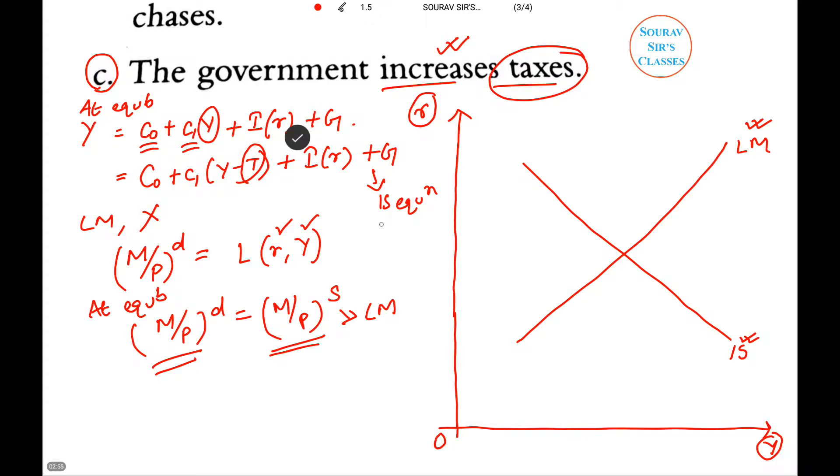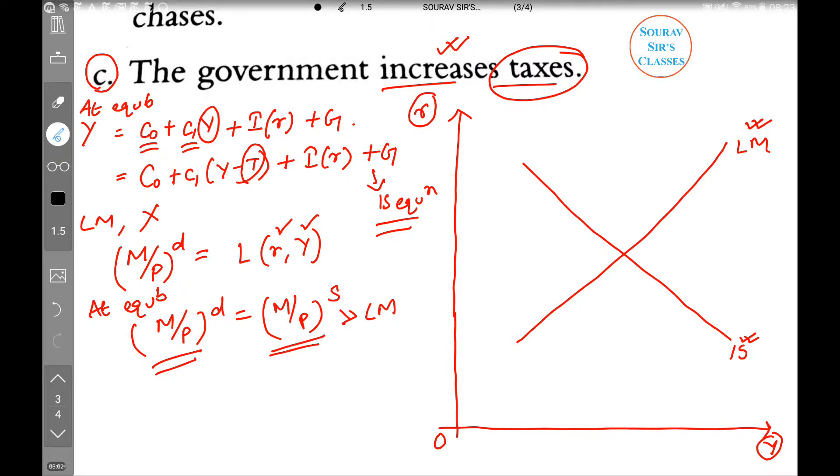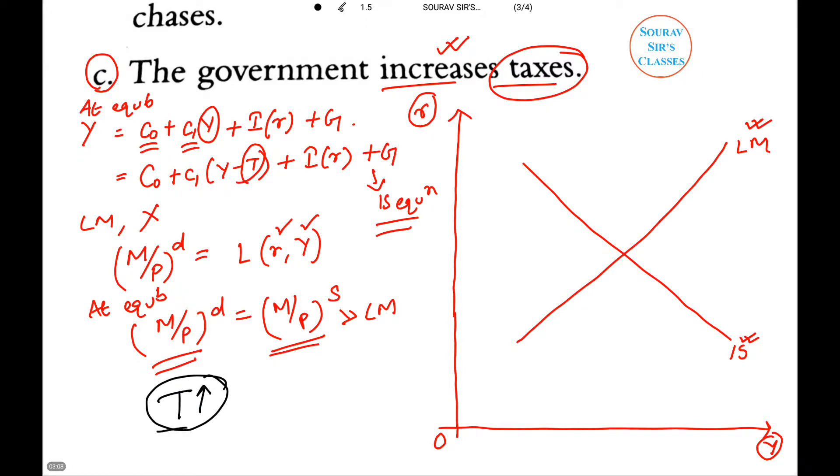If there is an increase in tax, the tax is increasing. T comes with a negative sign here, so definitely this entire value will fall. So IS curve will be shifted downwards. Let us shift the IS curve downwards.